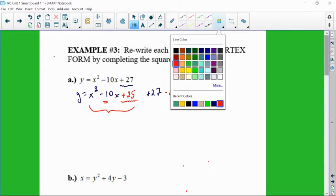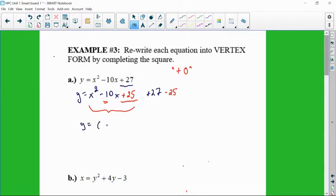Okay, so now I'm going to go back here, and so I'm going to factor this as y equals, and that's x minus 5 squared, and then 27 minus 25 is 2. So then there's my vertex form, and if I had to pick out the vertex, I know that it is 5 comma 2, which is nice.